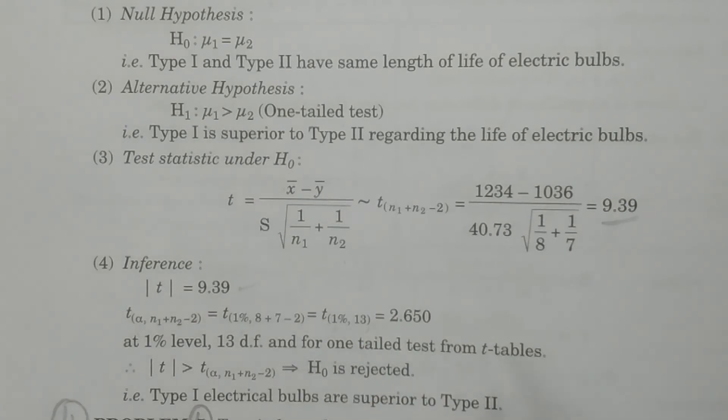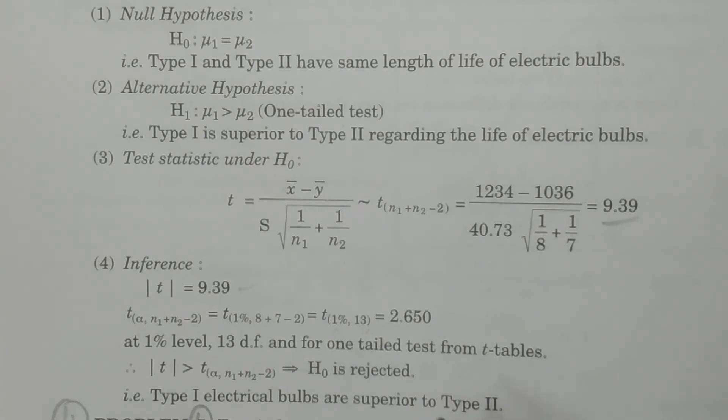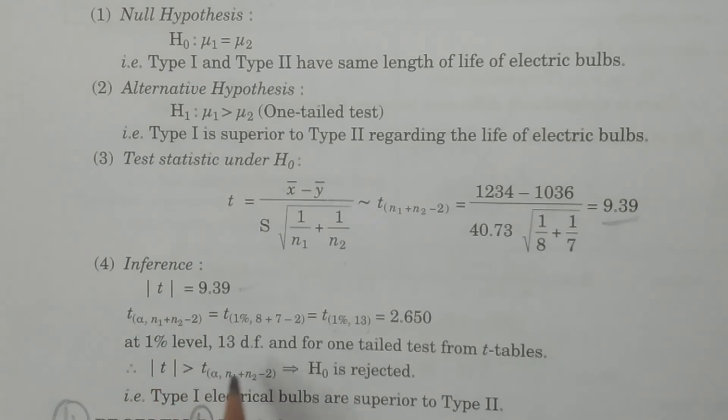And we have to consider for one-tailed test. At one-tailed test, that is for one-tailed test from the t-tables, at 1 percent level, 13 degrees of freedom, one-tailed test from the t-tables,